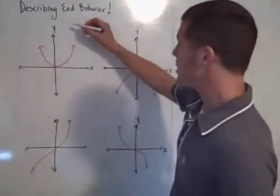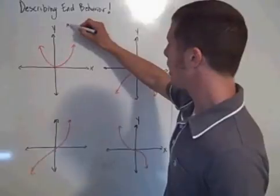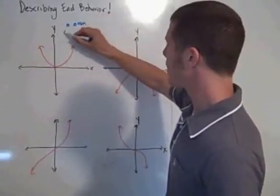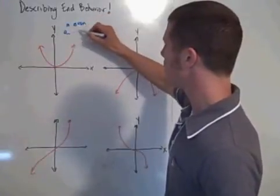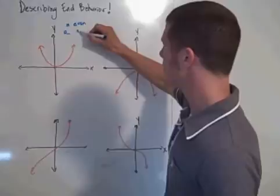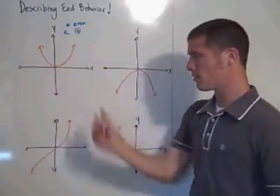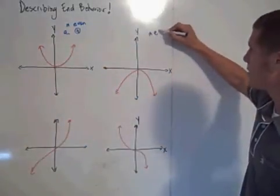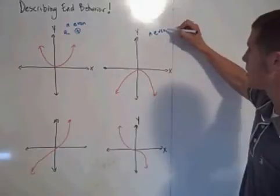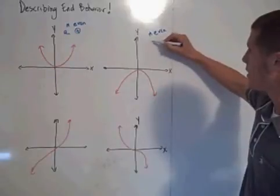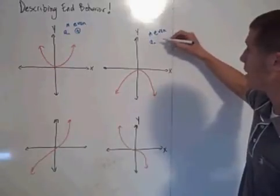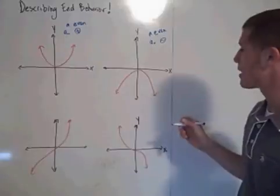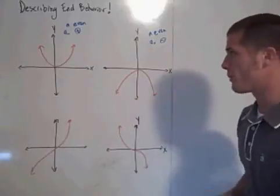The degree can be even — n even — and the leading coefficient positive, then you have a situation like this. If n is even and the leading coefficient is negative, then you have a situation like this.